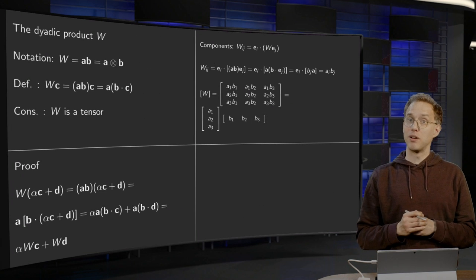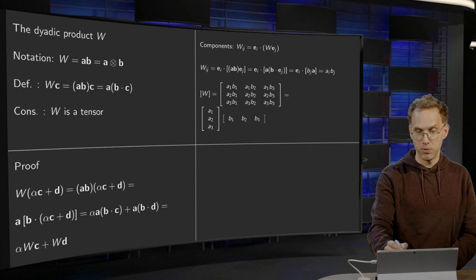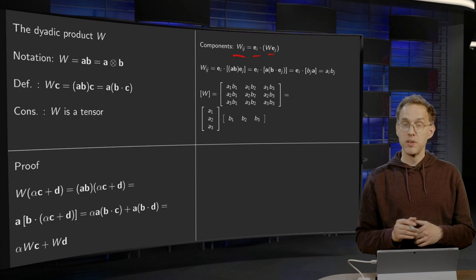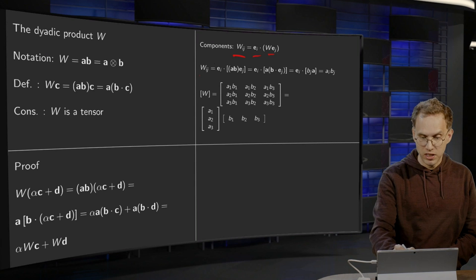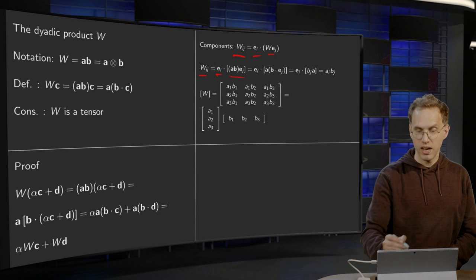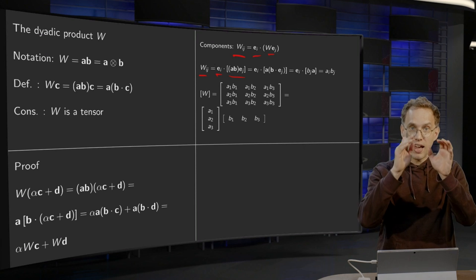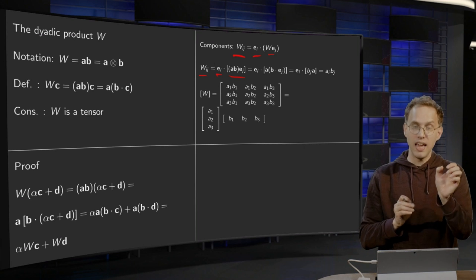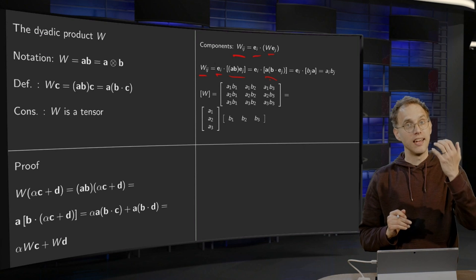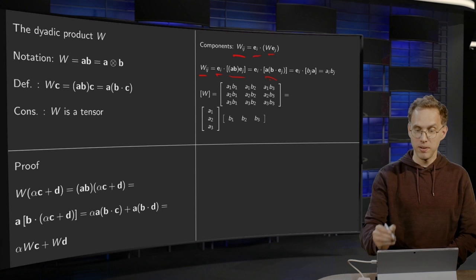Next, let's take a look at how we can compute the components of W. Well, as we know the components are always given by computing WIJ equals EI inner product W times EJ. So, if we want to compute WIJ, all those numbers, we have to take the inner product of EI with AB working on EJ. Now, by definition of the dyadic product, AB working on EJ equals A times the inner product of B with EJ. So, that's what's done over here. But if you take the inner product of B with EJ, you're just selecting the Jth component of B, so the BJ.